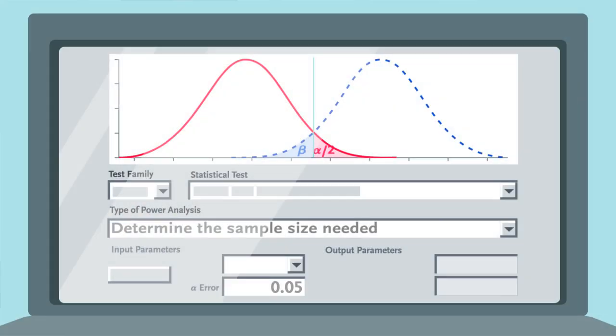Before a trial is launched, investigators conduct a power calculation to determine the sample size needed to detect a predetermined difference between groups with a predefined type 1 error, or alpha, usually 0.05.